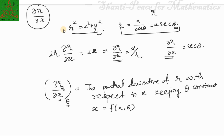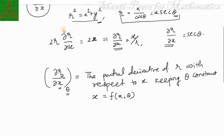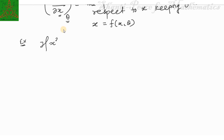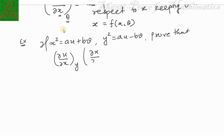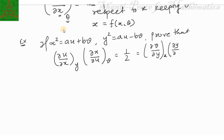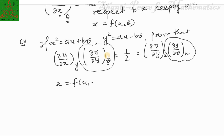Let us now look at an example of this type. If x² = au + bv and y² = au − bv, show that (∂u/∂x)_y · (∂x/∂u)_v = 1/2 and (∂v/∂y)_x · (∂y/∂v)_u = 1/2. Note that to compute these quantities you need x as a function of u and v, and y as a function of u and v, which are already given.